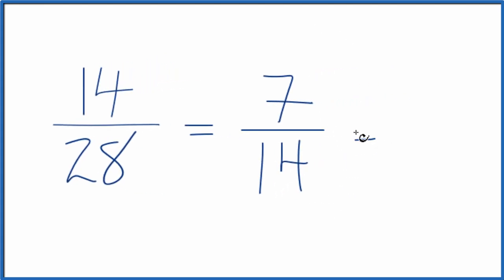Then it might be easier to see that we could divide 7 by 7 to get 1, and 14 by 7 to get 2. We end up with the same answer.